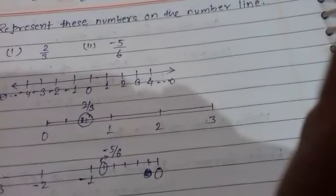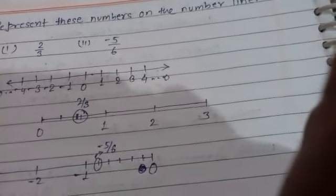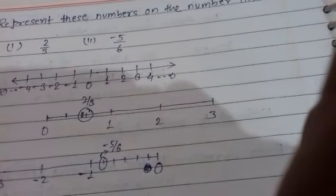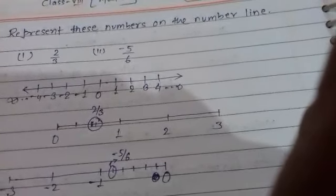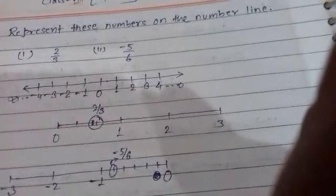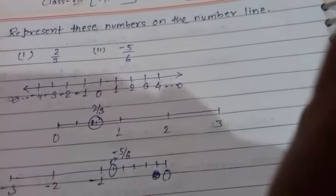Now your first unit, second unit, and third unit, and then we are going to represent 2/3. In the case of 2/3, the denominator of the rational number is 3.